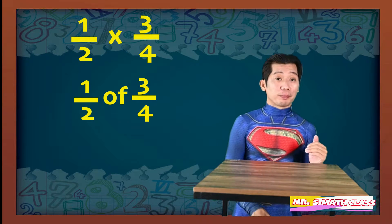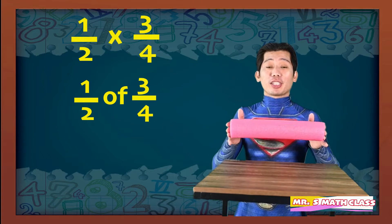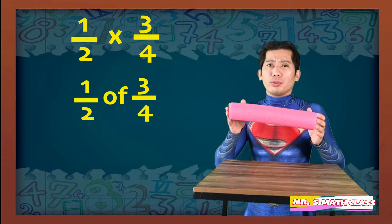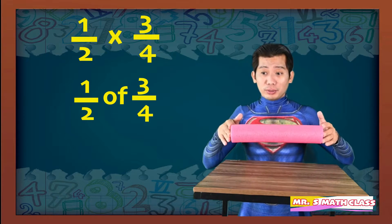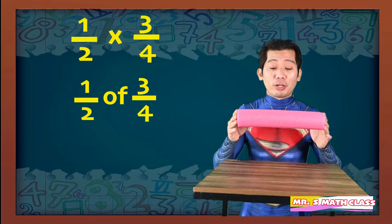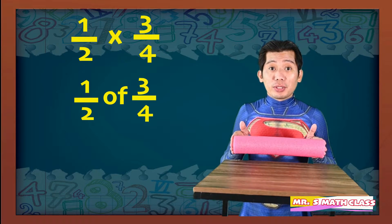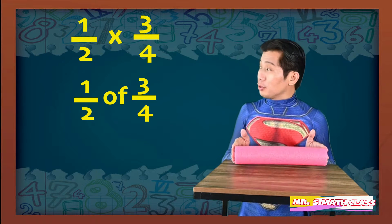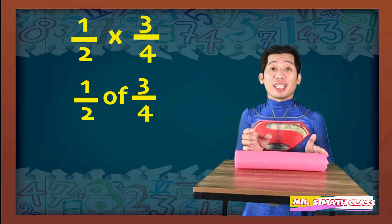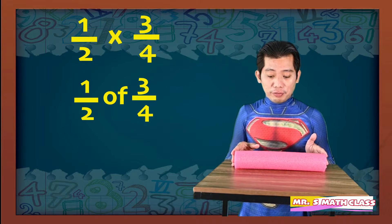And to help us solve the problem, let's have this one. This represents one whole — it could be one whole pizza, one whole cake, one whole block of wood. Now let's have this to represent as our one whole. Of course, we're not using this entire one whole. We're only going to use three-fourths of it, because we're going to find one half of three-fourths. So let's get three-fourths of this whole.